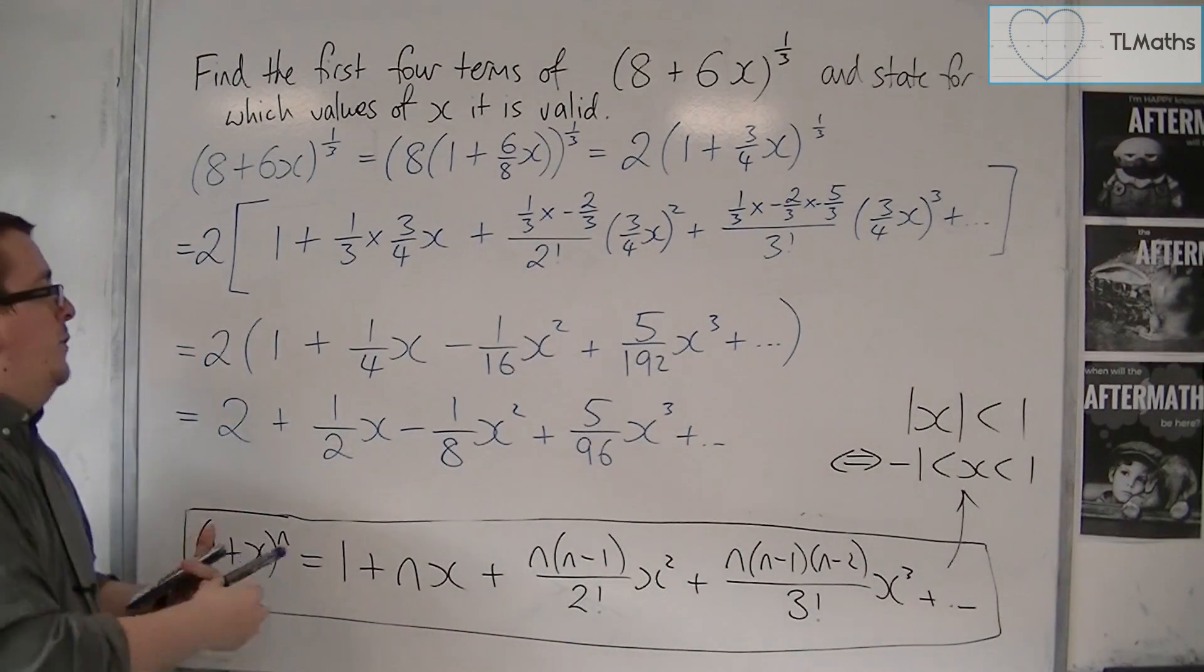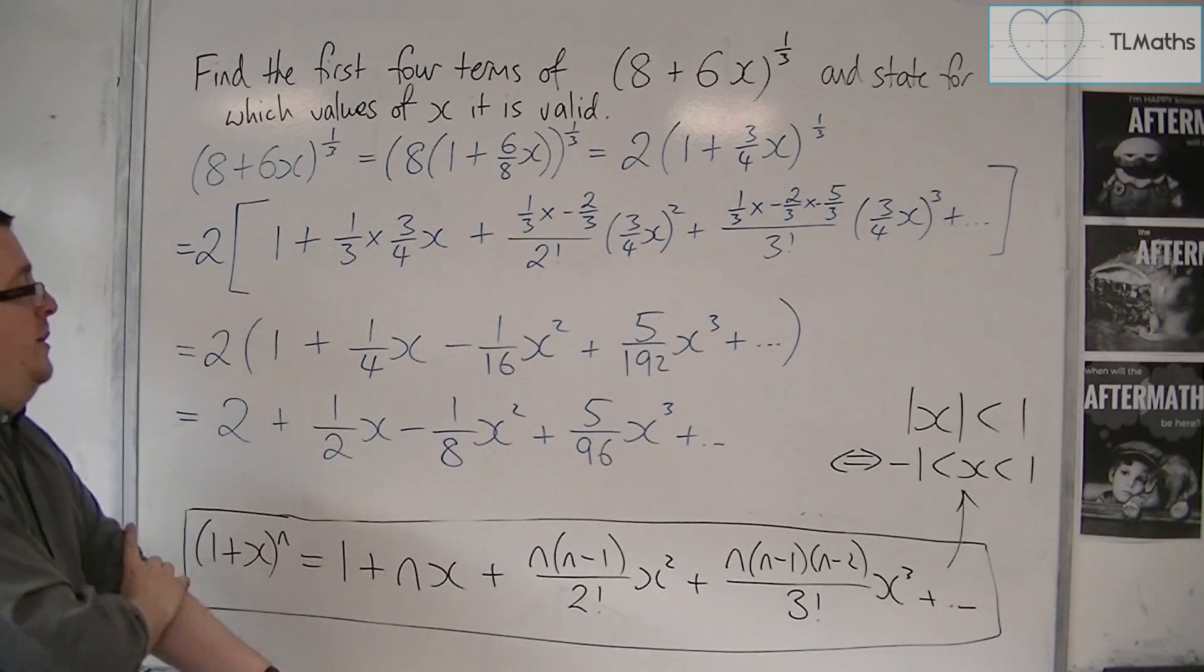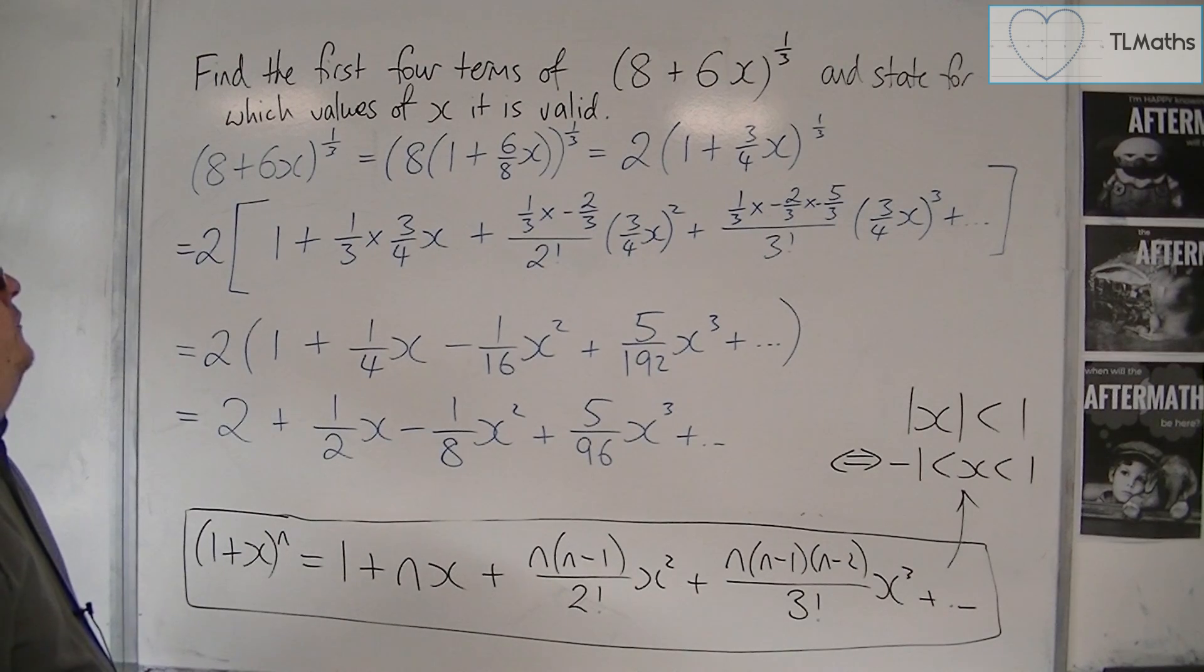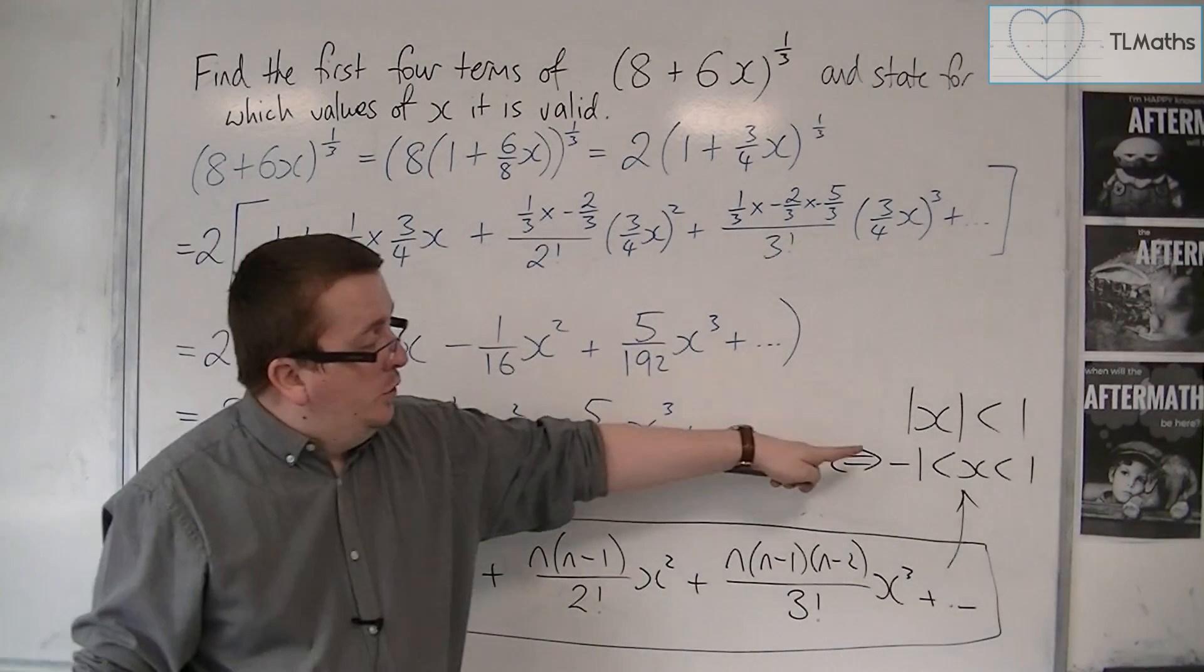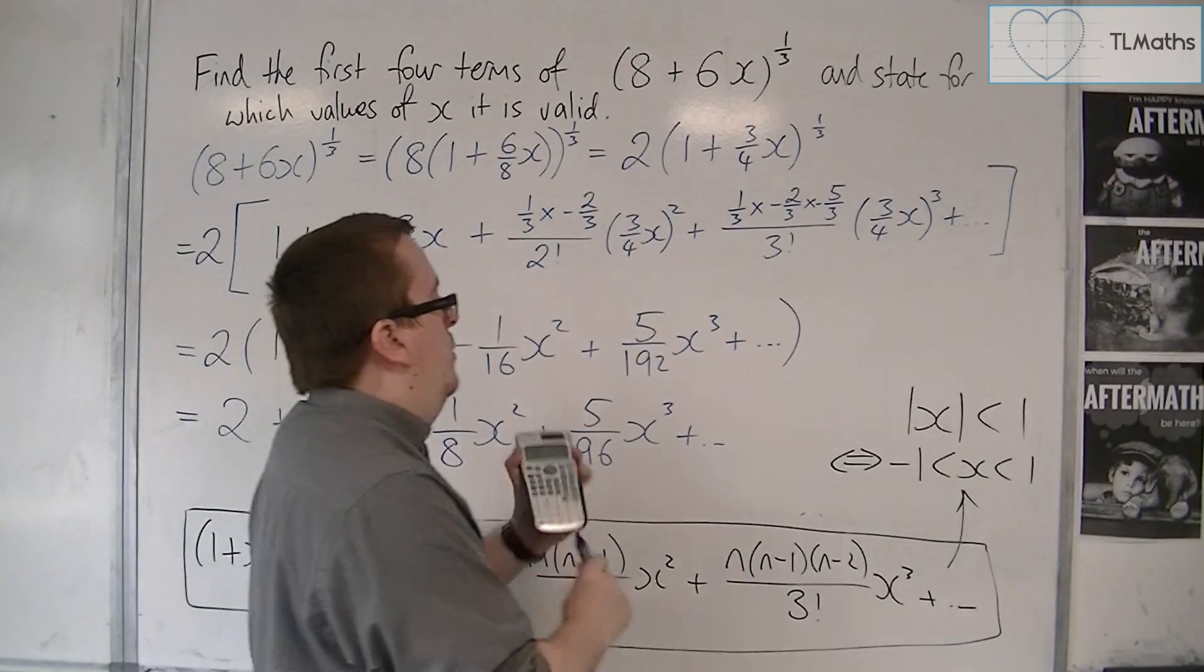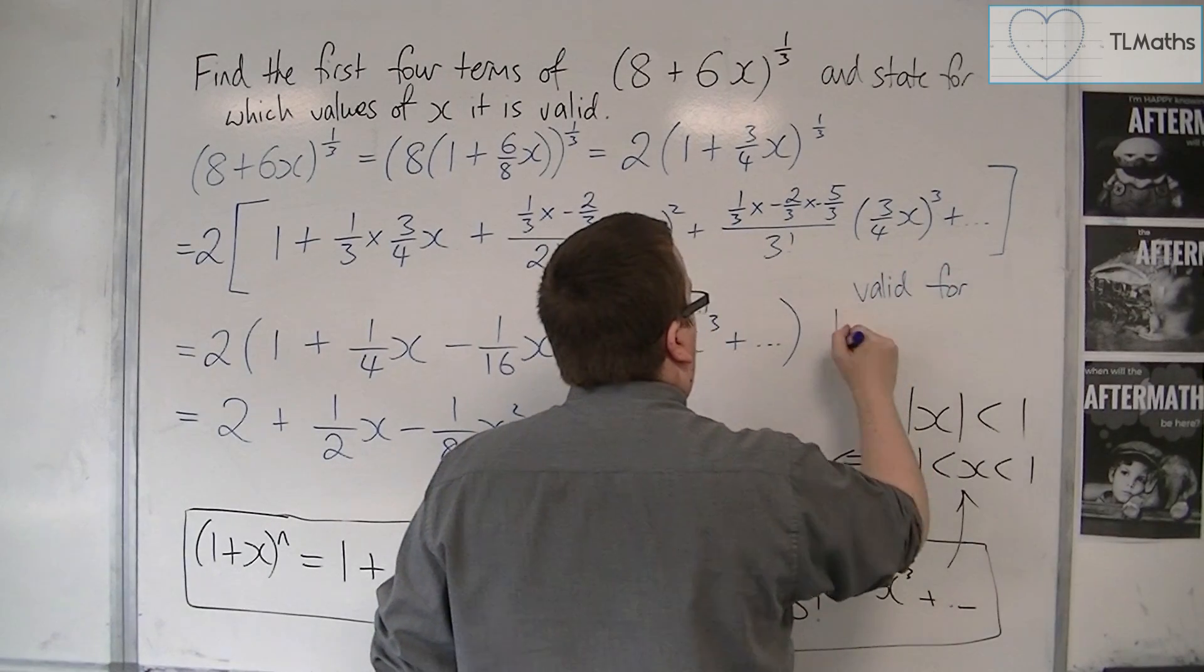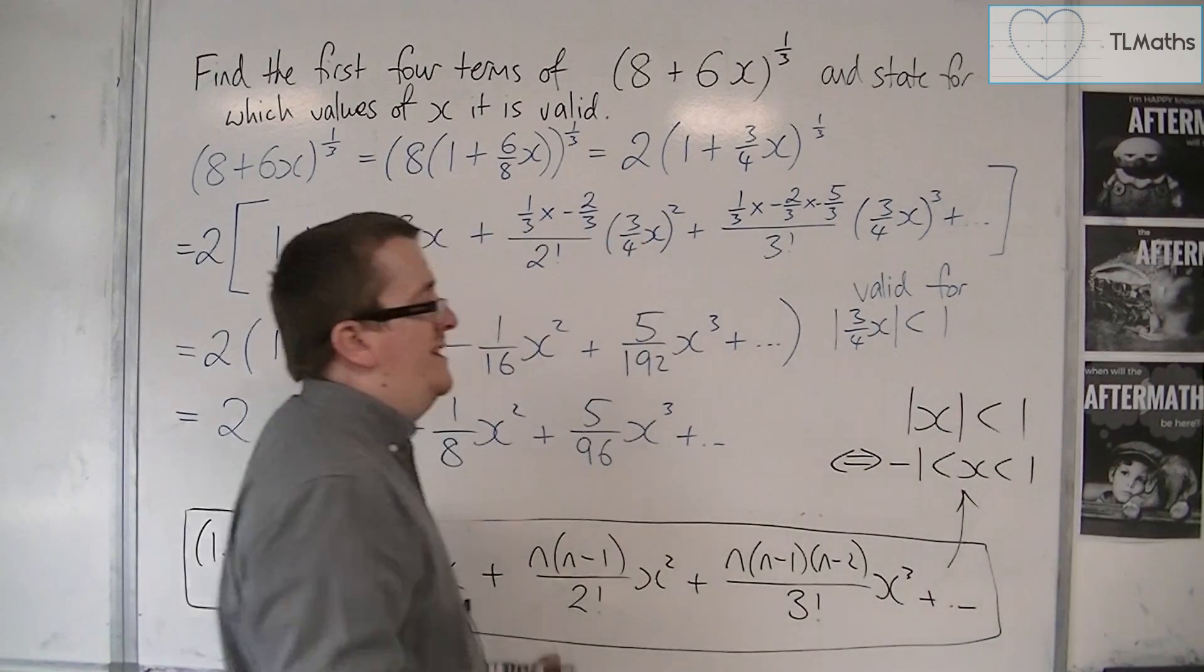x^3, and then you've got the other terms. So that is the expansion, that's the first four terms of this expansion. We then need to state the values of x for which it is valid. This is what (1 + x)^n is valid for, so the x here has been replaced with 3/4 x.